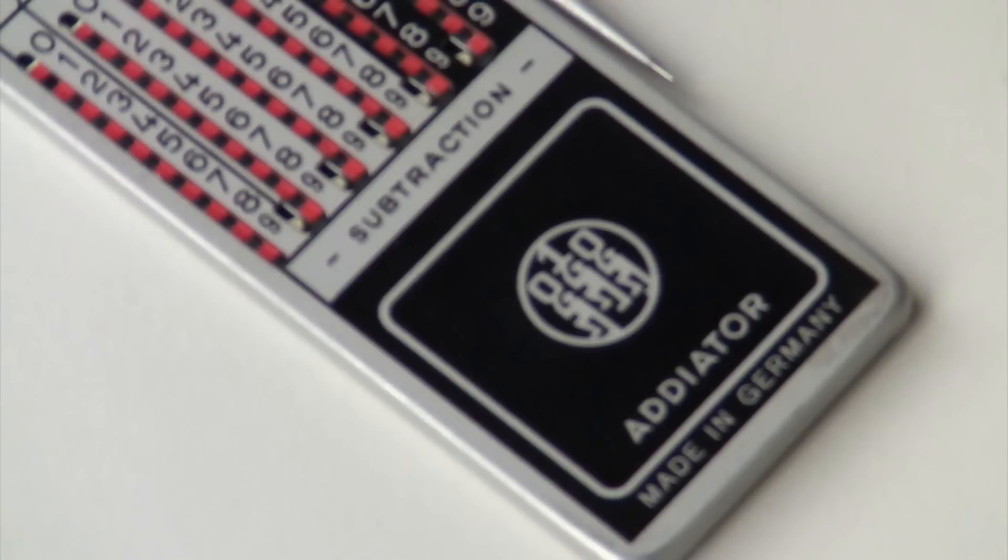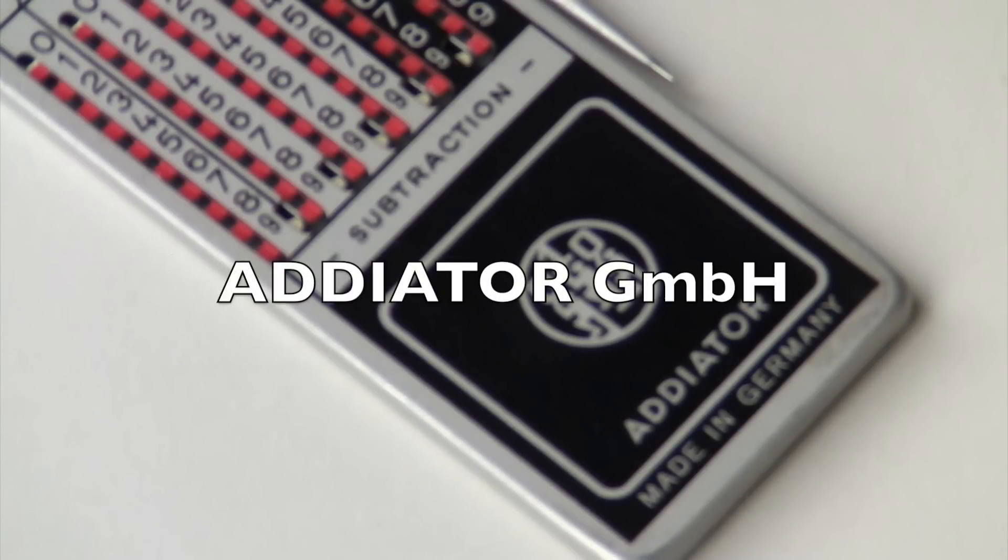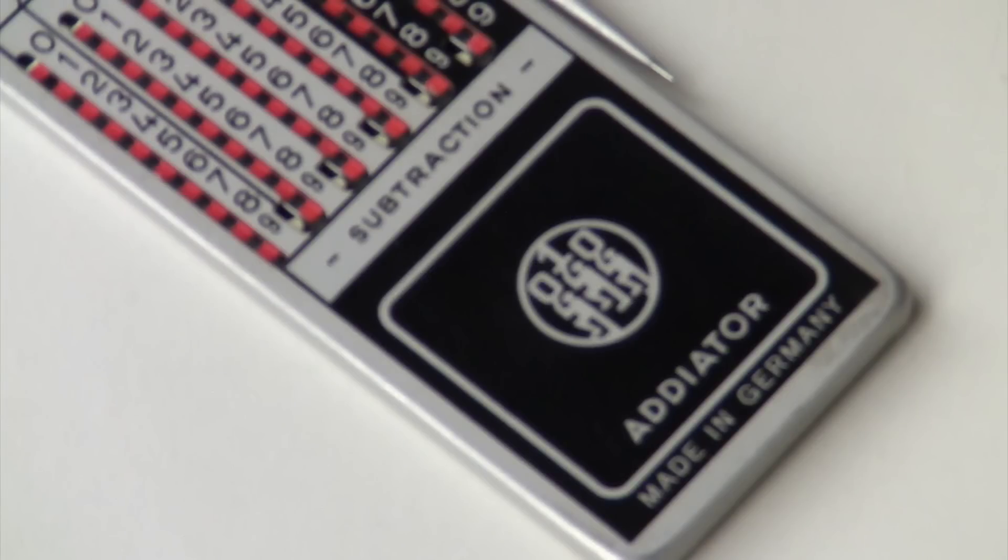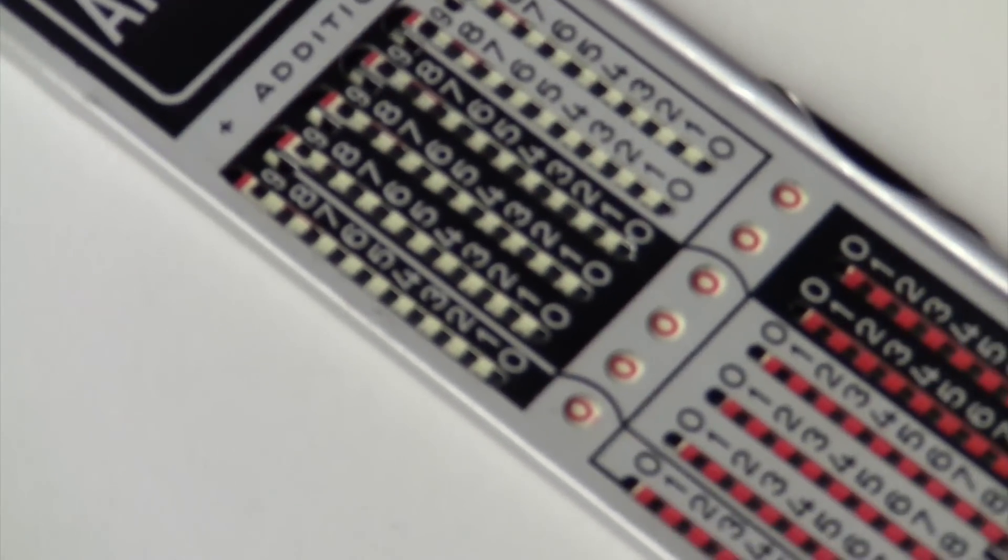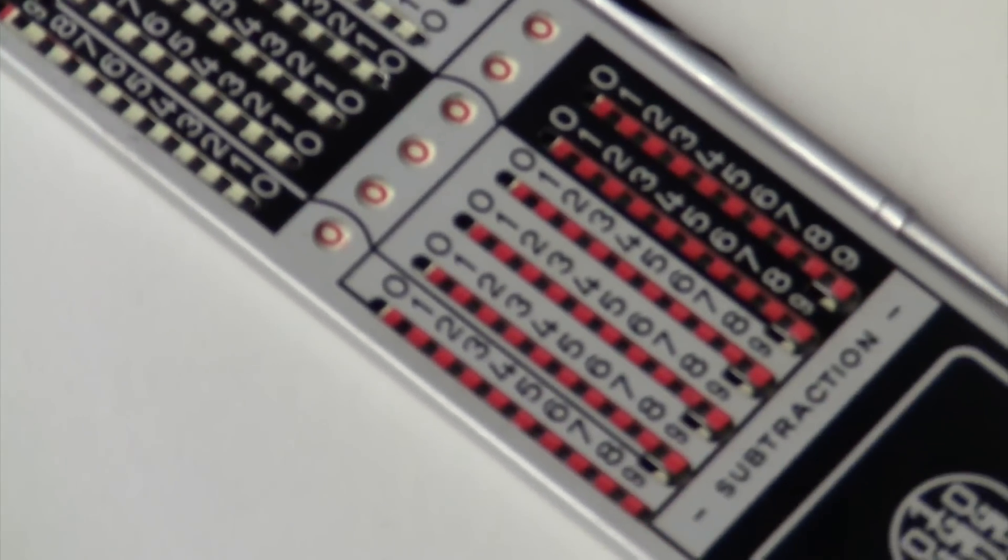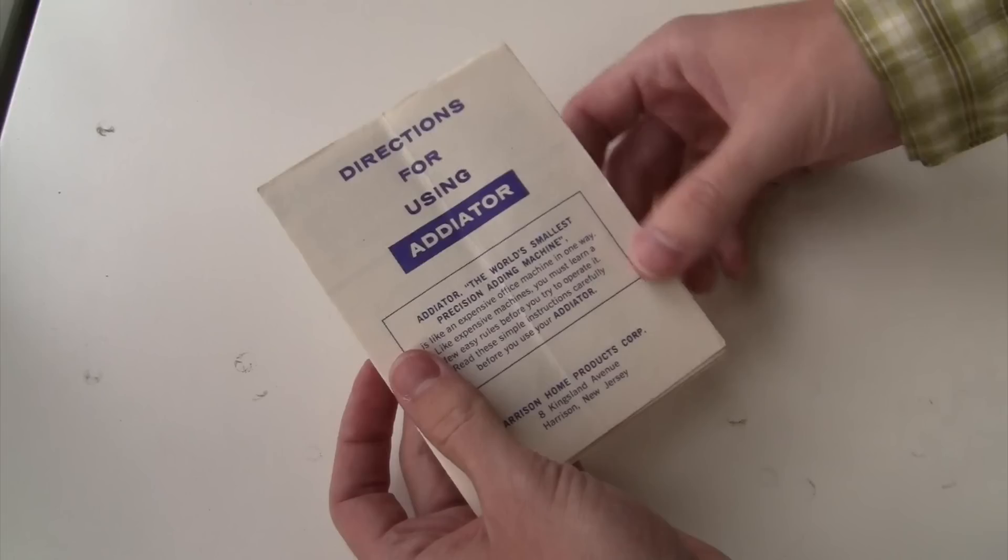The name of this thing is a bit of a mystery. Adiator is actually the name of the company that manufactured them. Adiator Gumby. Adiator made lots of different variations on this basic design. And this particular one has the model name Arithma, whatever that means. But all their marketing in English just called it an adiator.